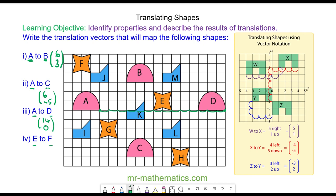Finally for question four, from e to f we're going nine to the left, which is negative nine, and four up. So the translation vector is (−9, 4). Thank you very much for watching, I hope you found that useful. Thanks again and take care.